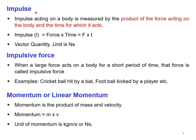First, let us see what is meant by impulse. As per the definition, impulse acting on a body is measured by the product of force acting on the body and the time for which it acts. So by definition, impulse is equal to force multiplied by time — F into T. Since the unit of force is Newton and the unit of time is seconds, the unit for impulse is Newton-second. Impulse is a vector quantity.